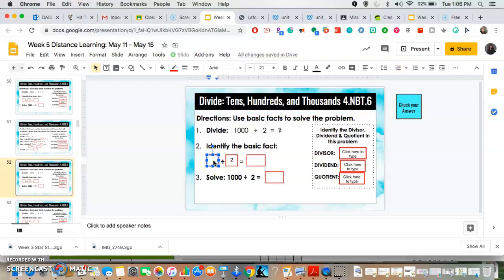So let's do our basic fact. That means ten divided by two. That's something we can easily divide in our head, right? Ten divided by two is five because five times two is ten.